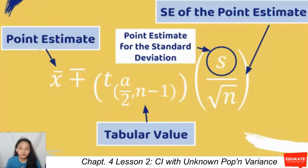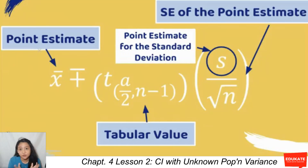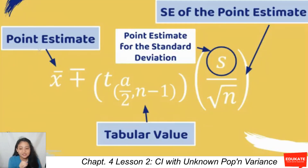Merging it all together, we have the point estimate, the tabular value, and the standard error of the point estimate, where S is the point estimate of the population standard deviation used in the confidence interval formula.